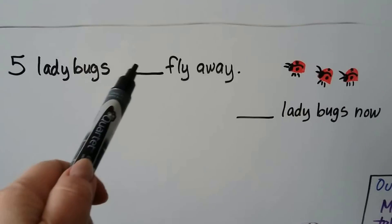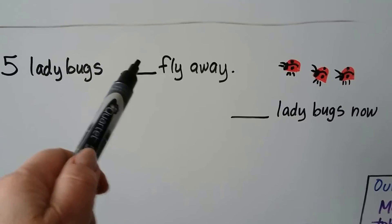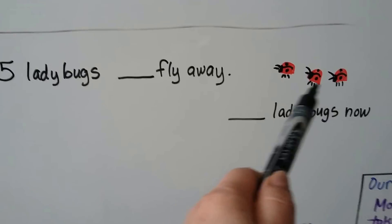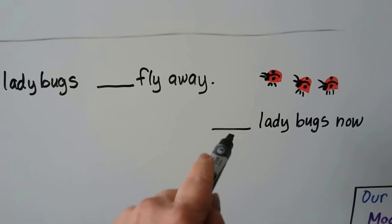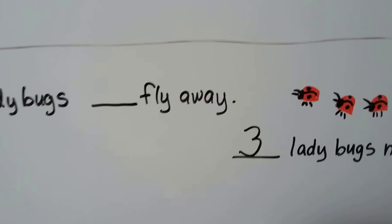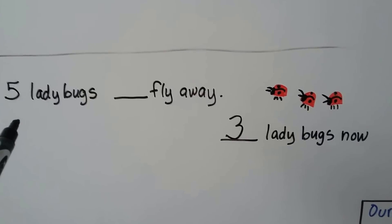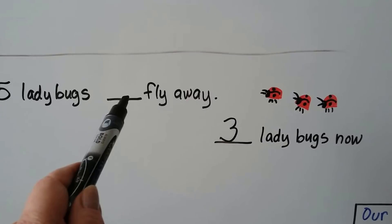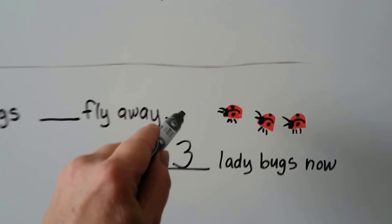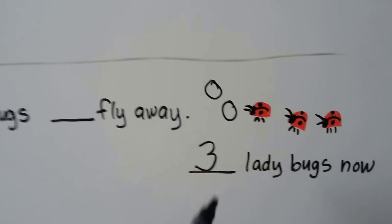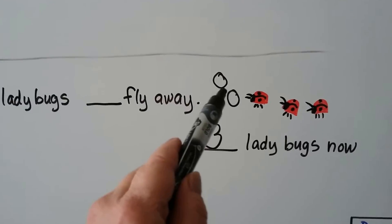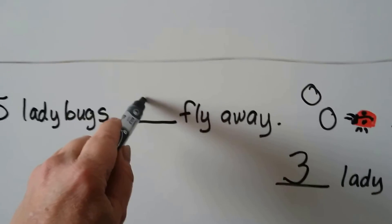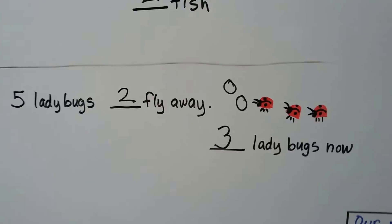Five ladybugs — some number of ladybugs fly away. How many ladybugs are left? How many ladybugs do we see here? One, two, three are left. If there were five ladybugs and some flew away and now there are three ladybugs, how many flew away? We can draw two more ladybugs — circles for ladybugs so that there would be five. We had to draw two circles, so we know two must have flown away. And now there are three ladybugs.